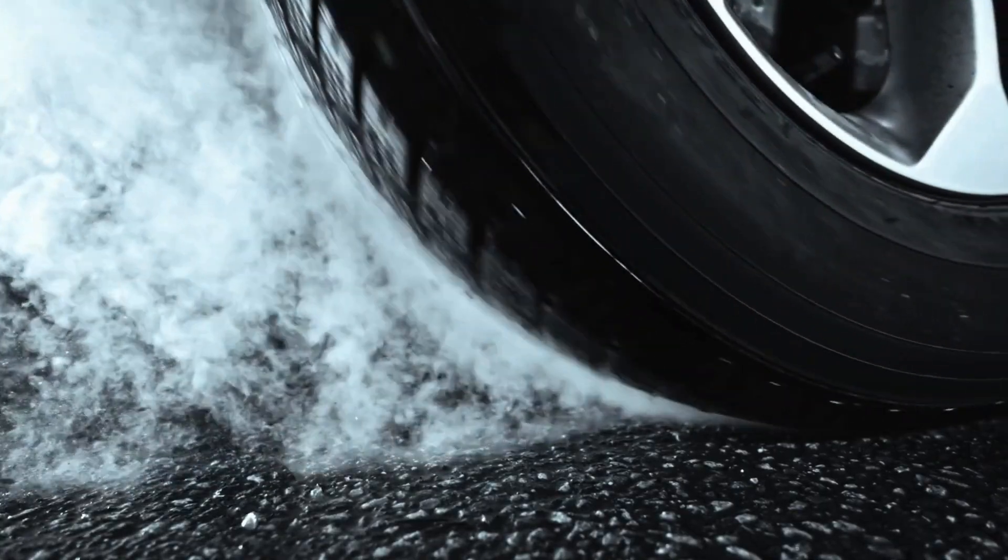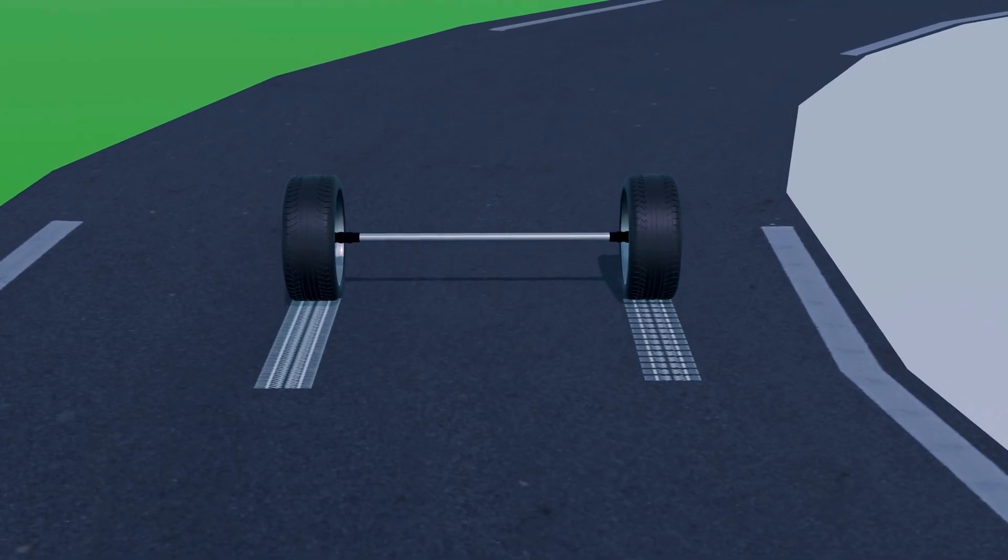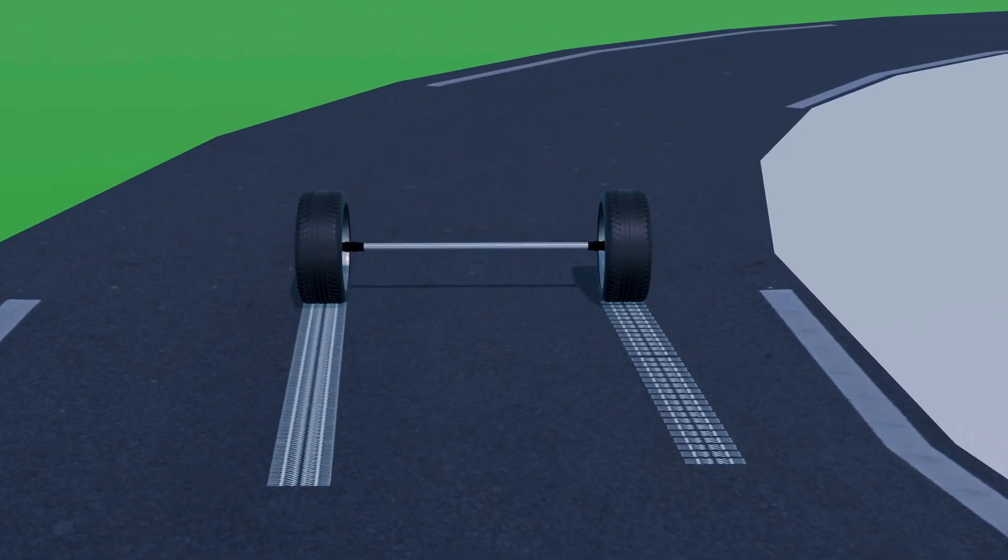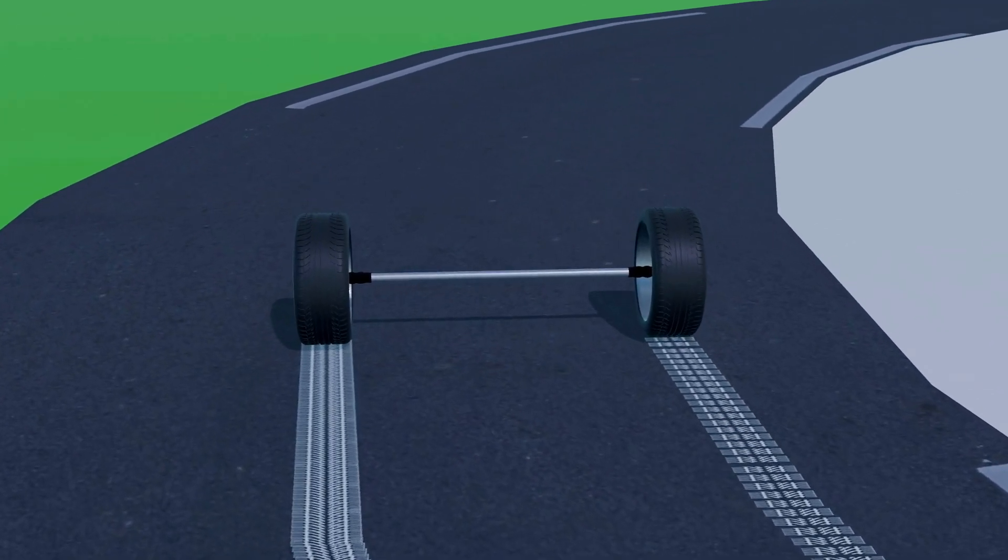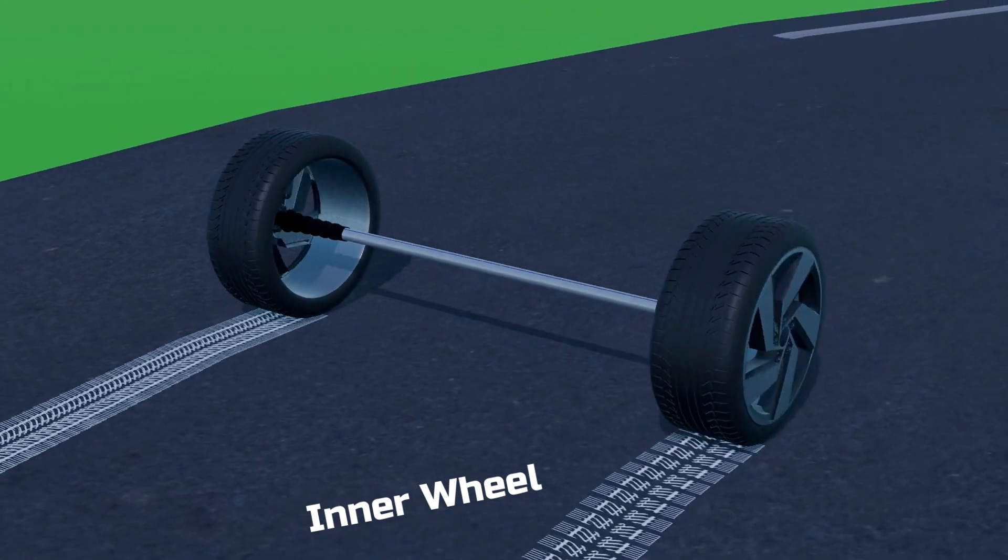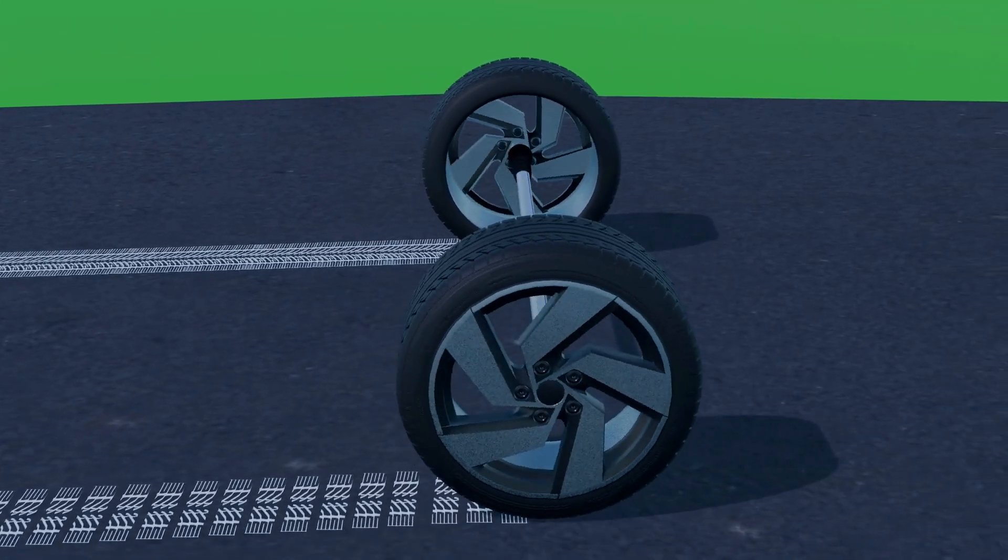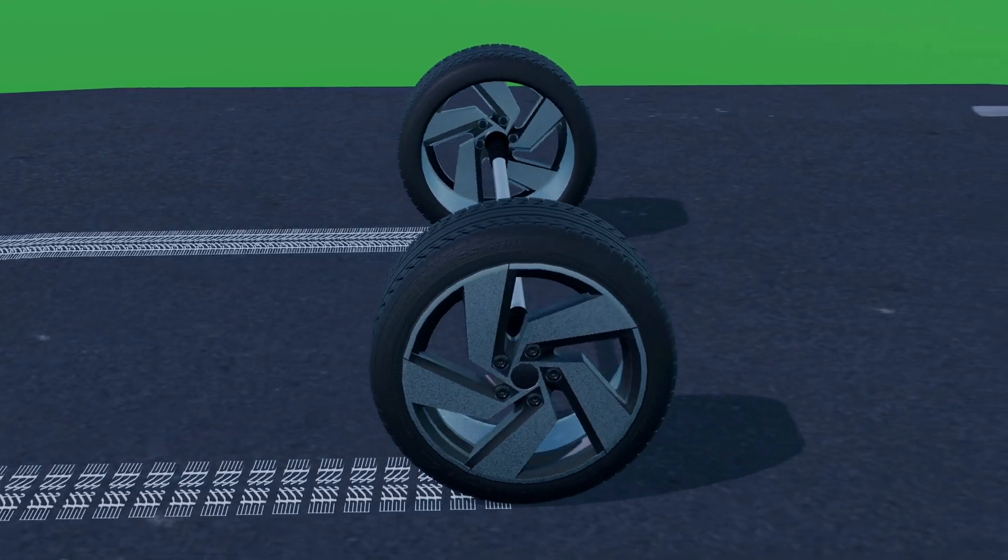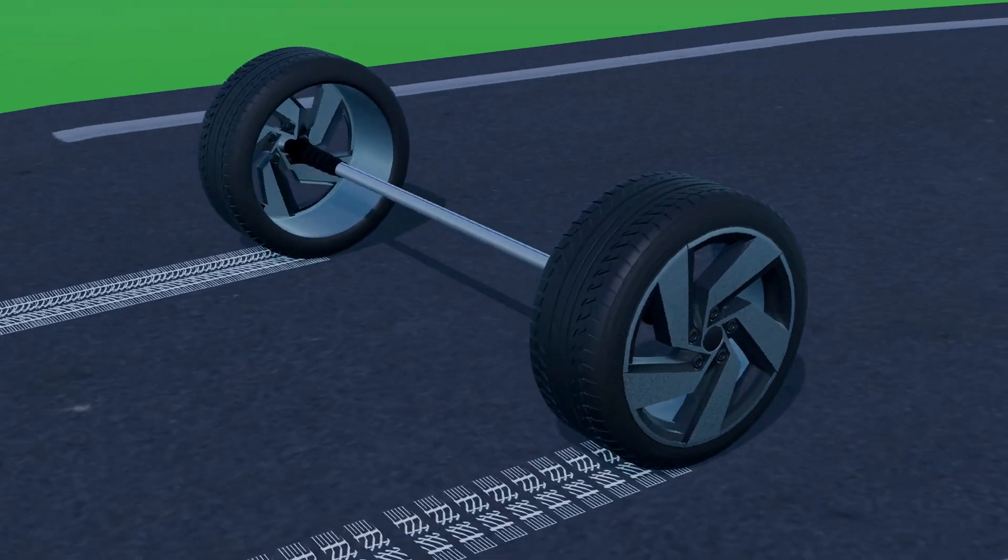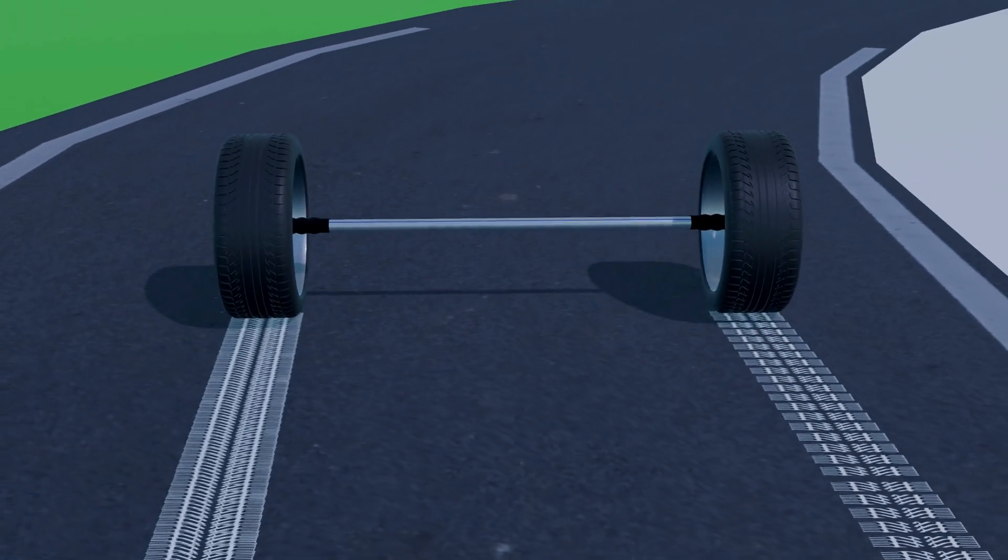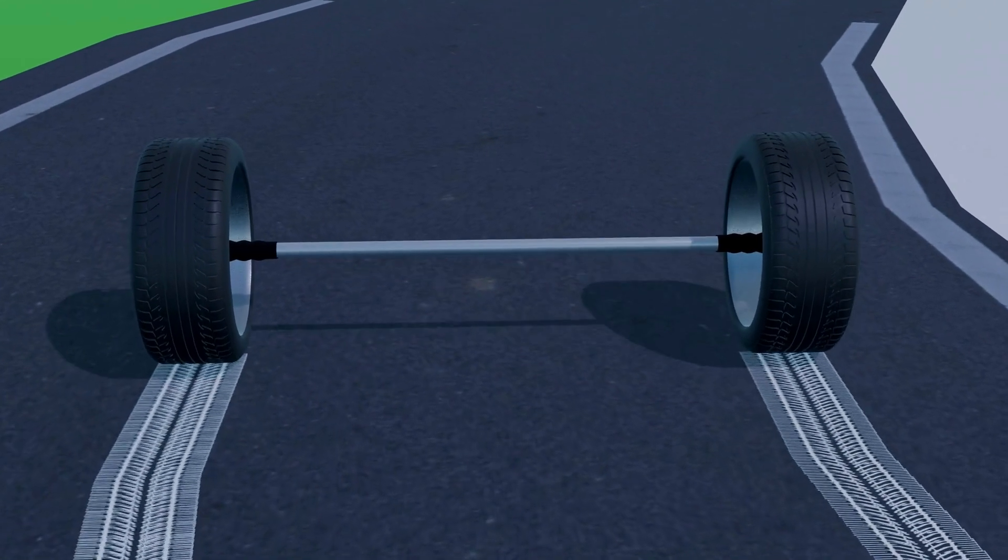There is another problem associated with the wheels of the vehicle. Imagine both rear wheels connected by a single solid shaft. Now, when the vehicle negotiates a turn, the outer wheel must travel a greater distance, while the inner wheel follows a shorter path. However, because the shaft forces both wheels to rotate at the same speed, the inner wheel is unable to adjust, and consequently slips or skids in an attempt to compensate for the difference. This condition leads to drivetrain wind-up, where mechanical stress accumulates within the drivetrain components rather than allowing natural wheel movement.